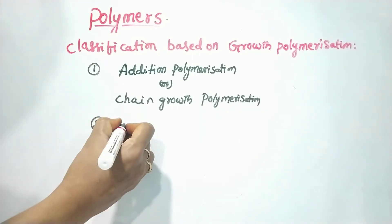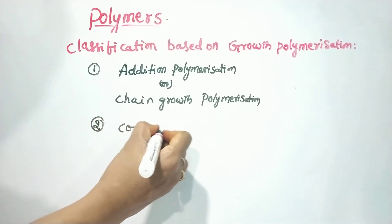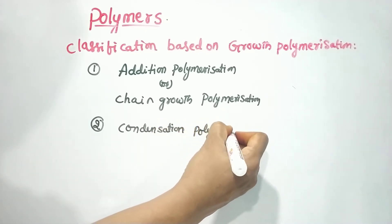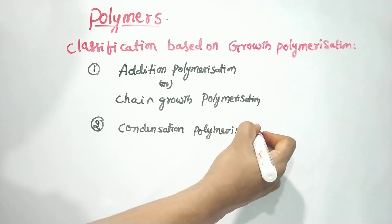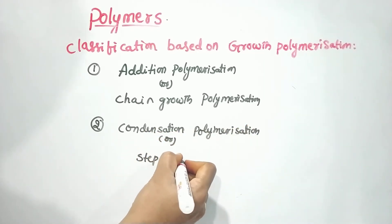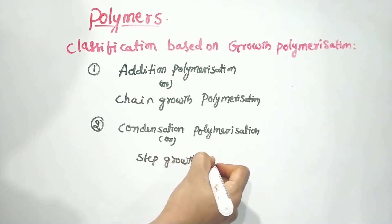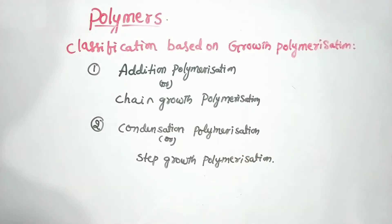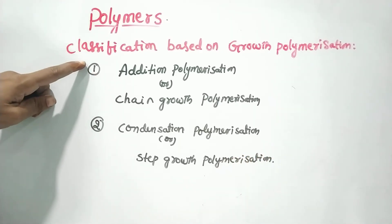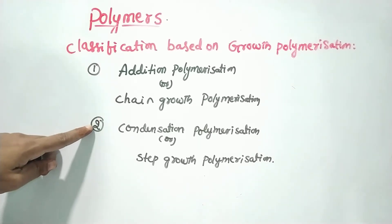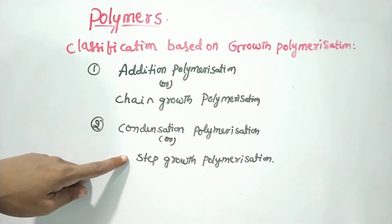The second one is condensation polymerization, also called step growth polymerization. So, two types under classification based on growth polymerization: addition polymerization or chain growth polymerization, and condensation polymerization or step growth polymerization.